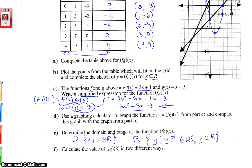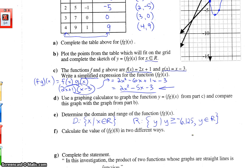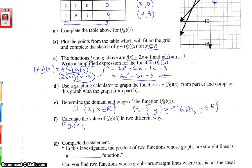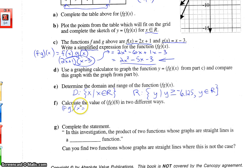And then part F, calculate the value of f times g of 8 in two different ways. Now we have actually found what f times g is. So if f times g of x is, if that is equal to, from part C above, 2x squared minus 5x minus 3, then if we want to figure out f times g of 8, we replace x with 8. So everywhere you see x in our function, we're going to scoop that out and put in 8. Off to the calculator, or you can simplify this in your head. 64 times 2, 128, minus 40, 88, minus 3 is 85.